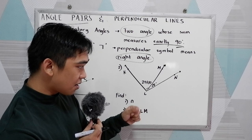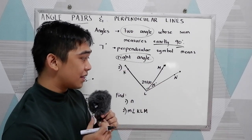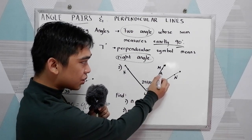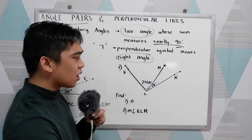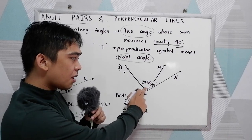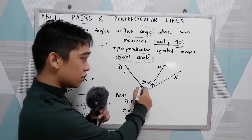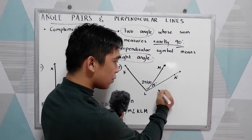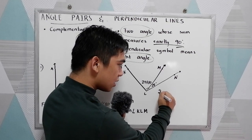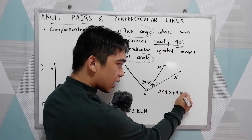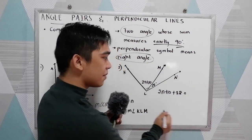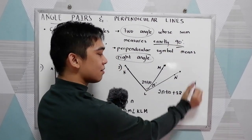Now, we are going to find N and measure angle KLM. In the given, we have the measure MLN, which is 28 degrees. So let us find first the measure of N. We know that if we are going to add 2N plus 10 plus 28, their sum is 90.